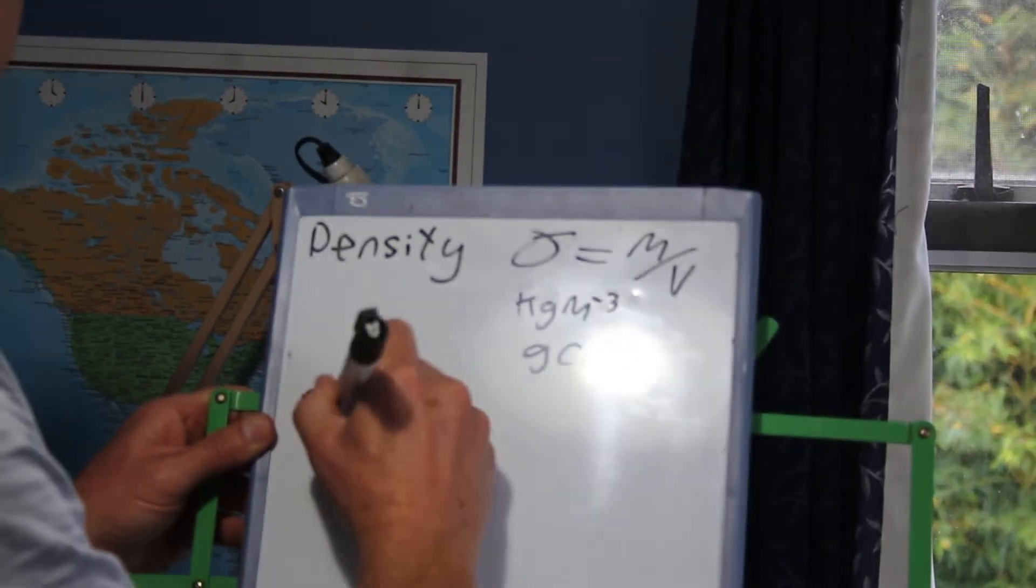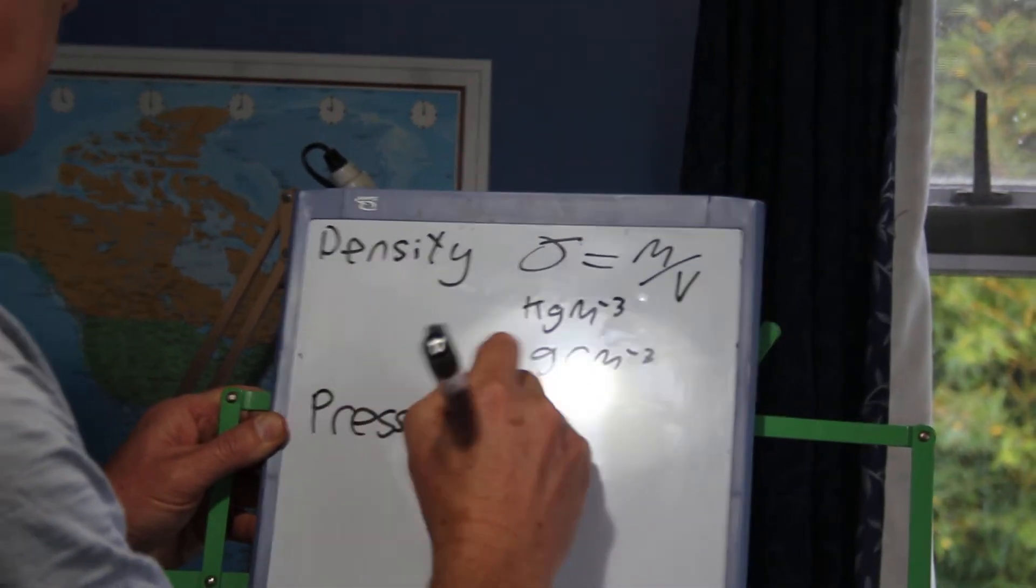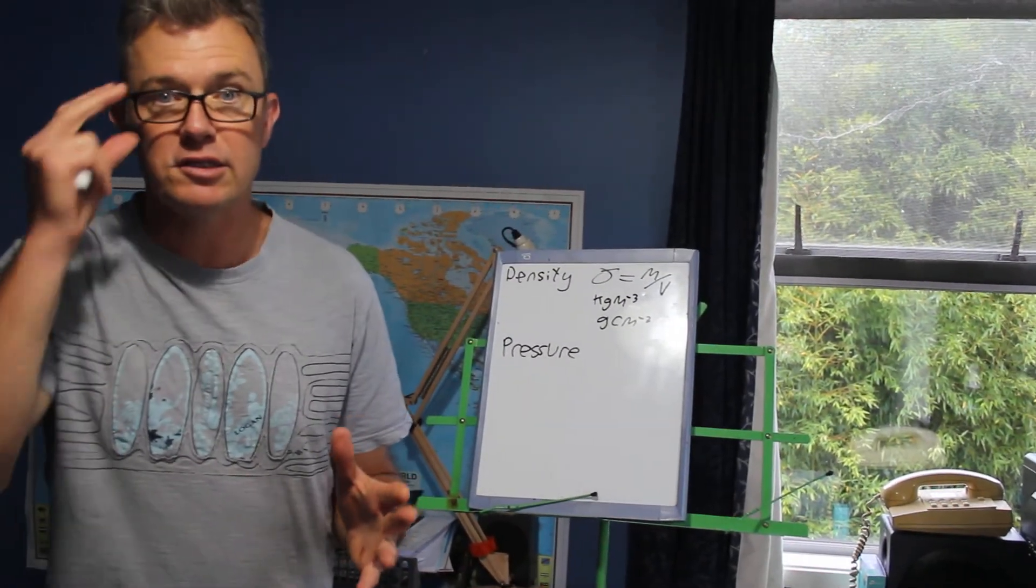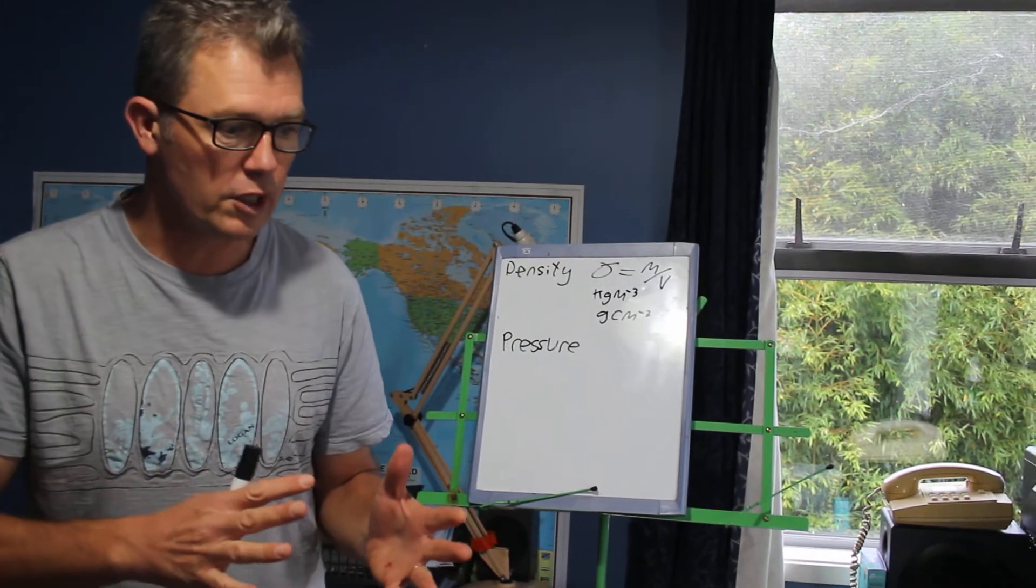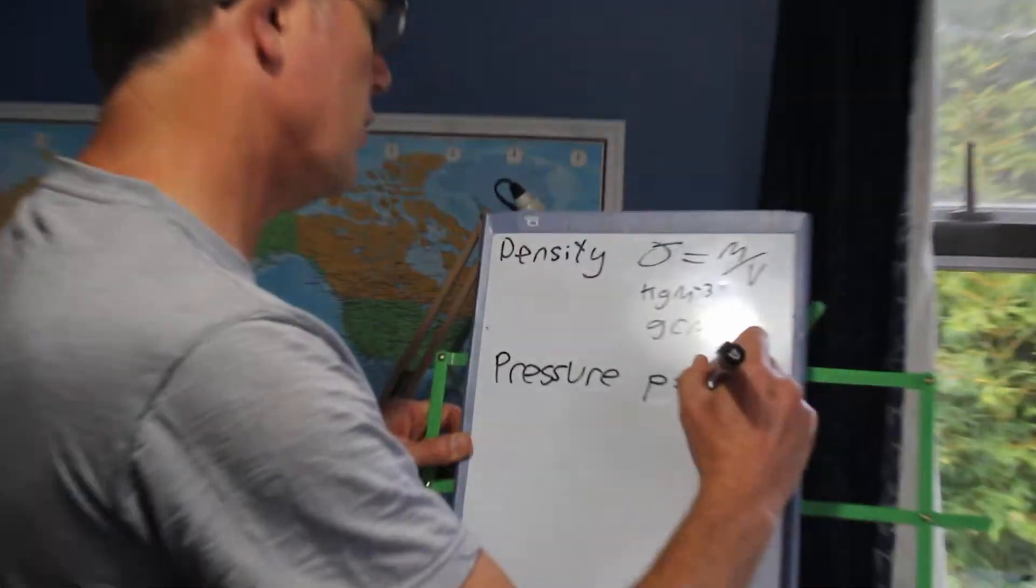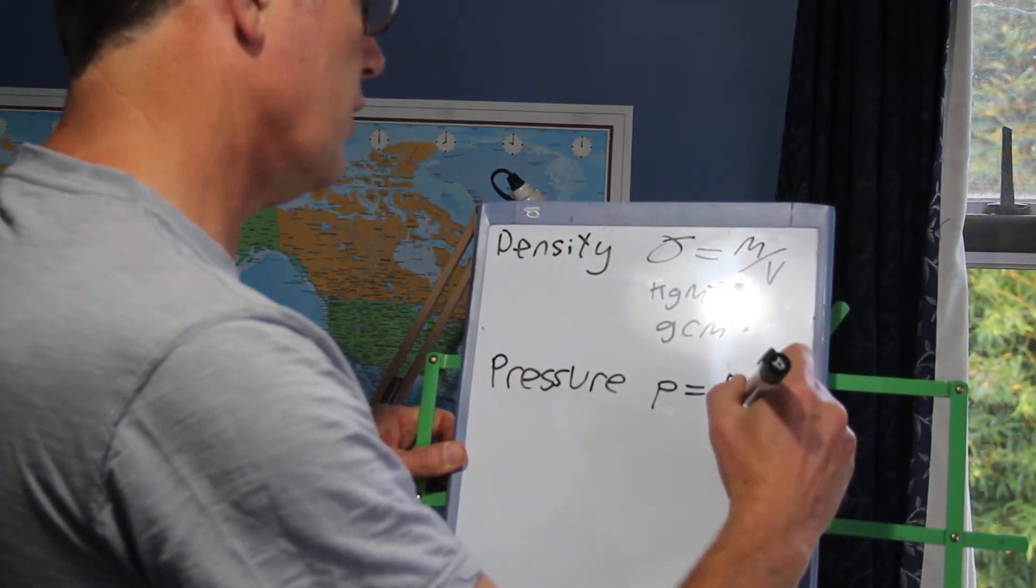What's pressure? Pressure. Pressure is the force applied per unit area. That's the definition of pressure. The force applied per unit area. So we say pressure, lowercase p equals force per unit area.